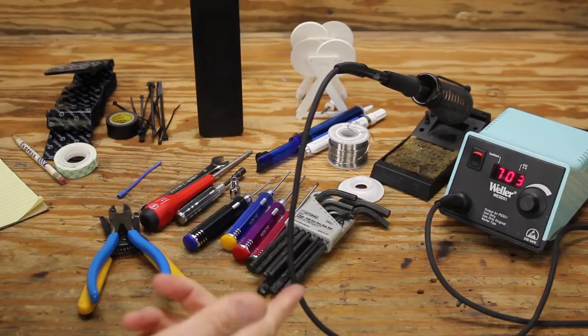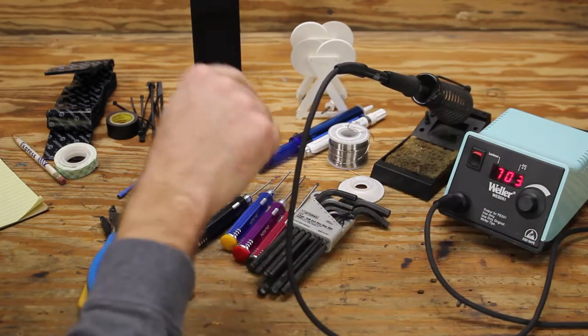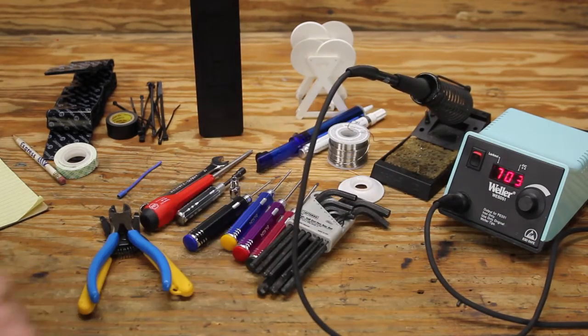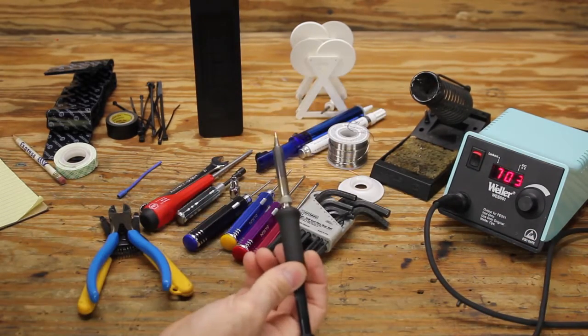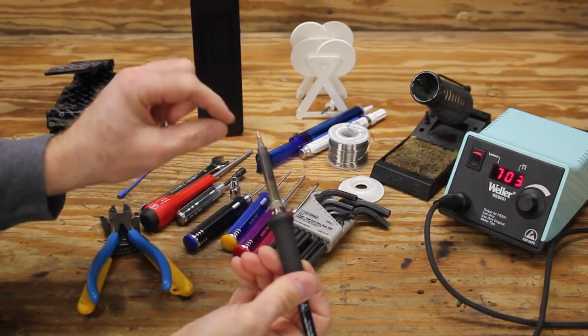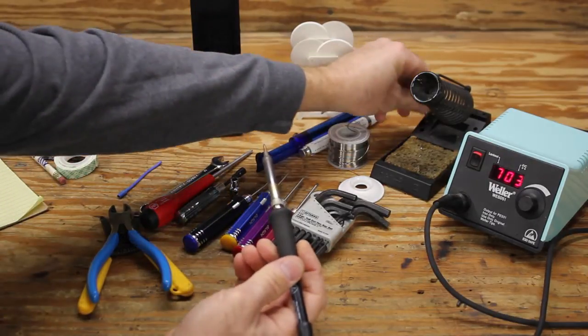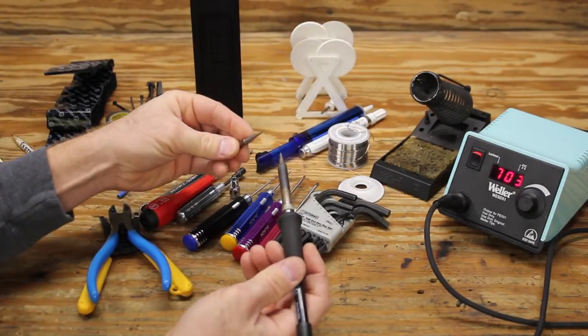First is the soldering iron. I use a Weller WESD51. It's called a soldering station because the unit that controls the temperature is separate from the iron itself. This comes with a 1/16 inch blade tip, so the tip is 1/16 of an inch wide. It's flat and blunt instead of being pointy like what they would call a pencil tip.